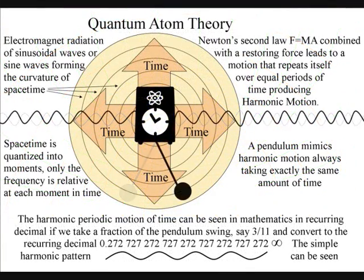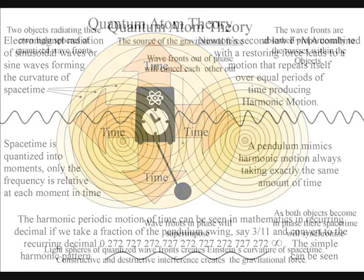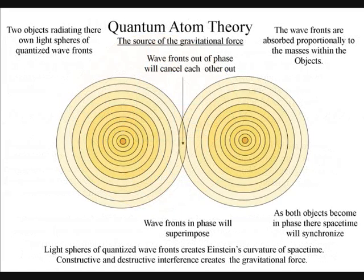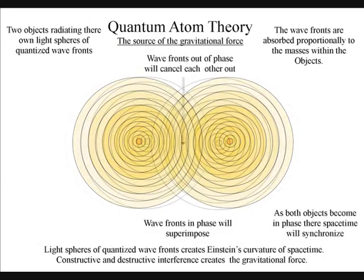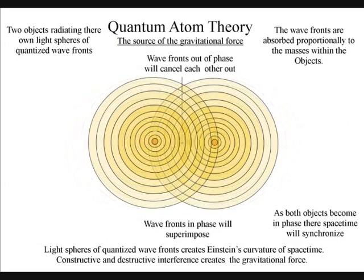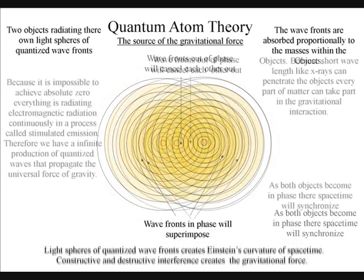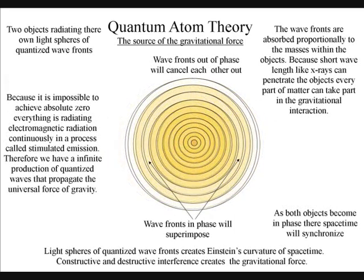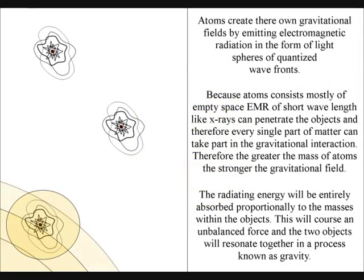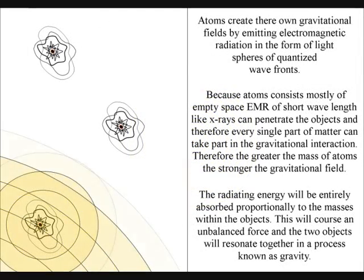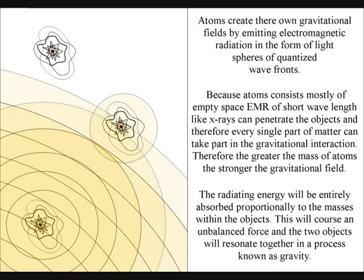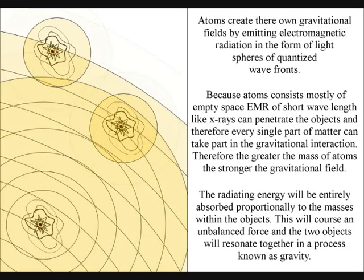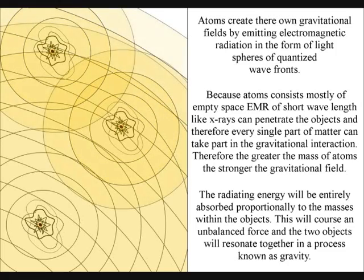The curvature of space-time is formed because when the light or electromagnetic radiation comes in contact with another object, it will be totally absorbed proportionally to the masses of that object. This will create an unbalanced force, and the two objects will resonate together in a process that we call gravity. Because atoms consist mostly of empty space, electromagnetic radiation of short wavelengths, like x-rays, can penetrate the objects. Therefore, every single part of matter can take part in the gravitational interaction.